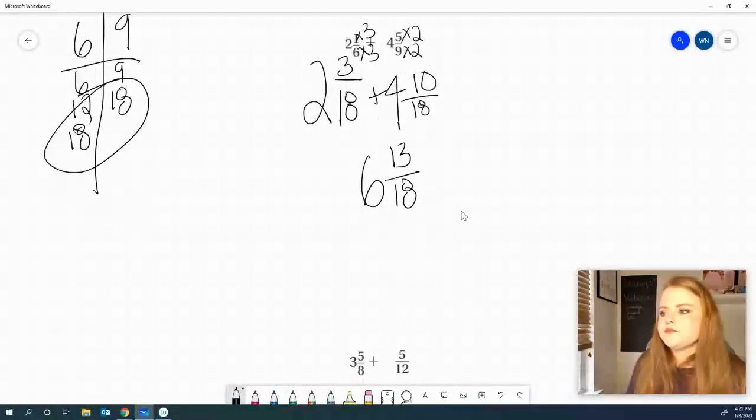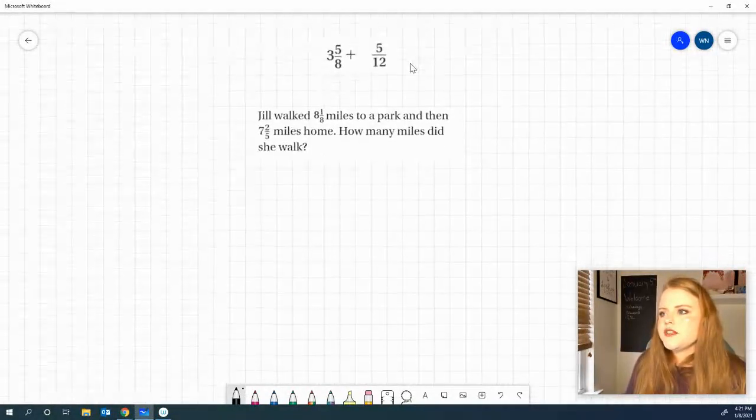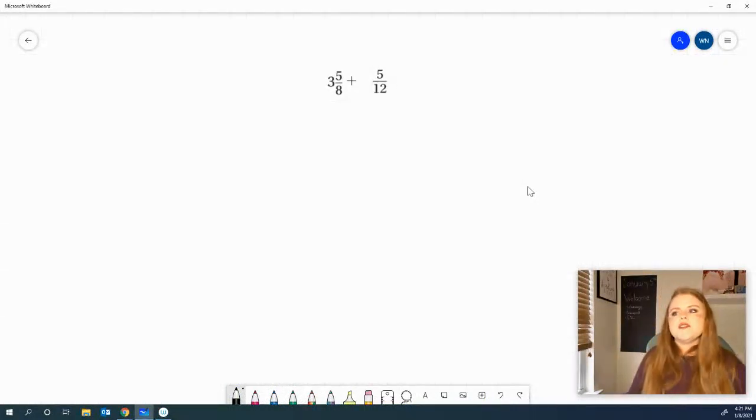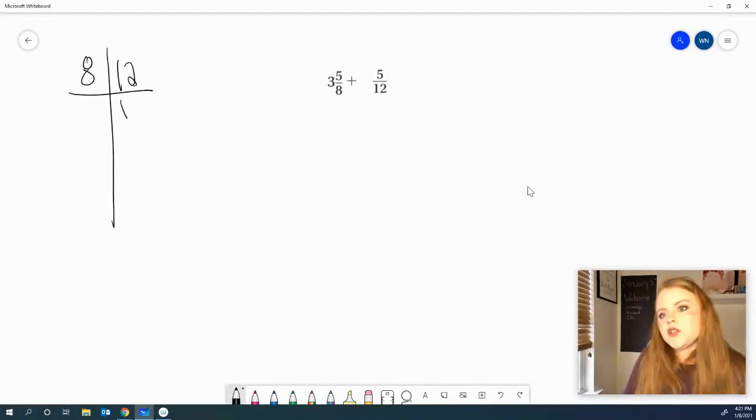Let's look at another one. This is going to be our last one before our word problem. 3 and 5 eighths plus 5 twelfths. Go ahead and work it out. For this one, I'm going to go ahead and draw my T-chart. We've got 12, 24, 8, 16, 24. 24 is going to be our least common multiple.